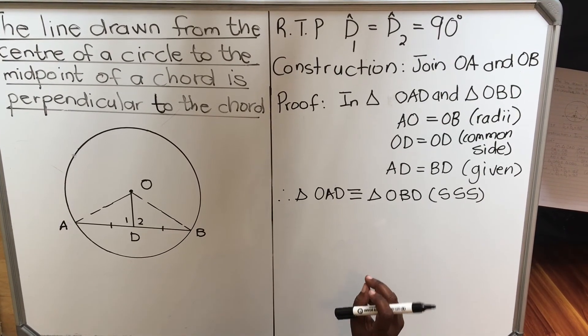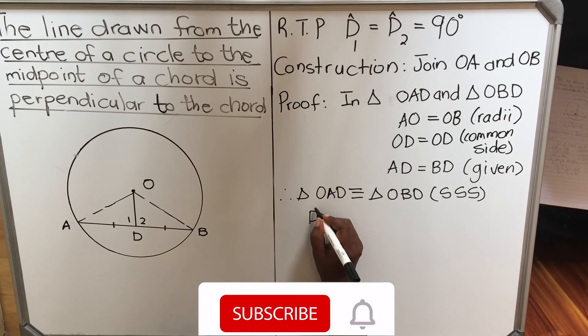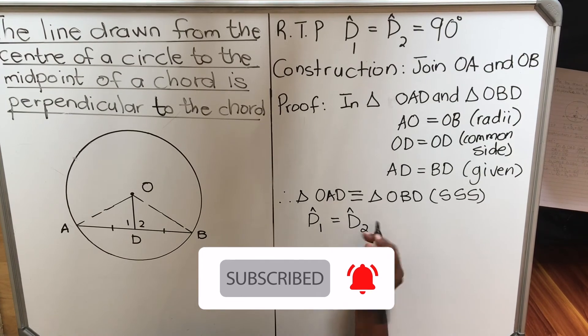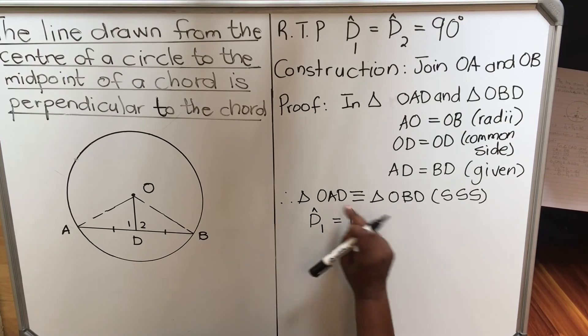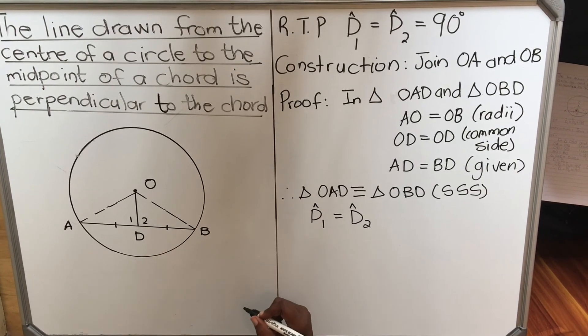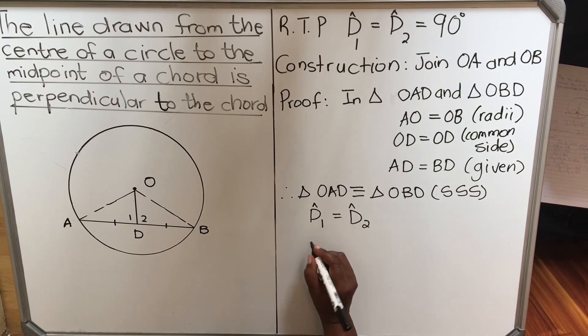Then if they are congruent, it means that angle D1 is equal to angle D2. Because these two triangles are congruent, so they're equal in all respects. Therefore, these two angles will be equal. But what do you notice about these angles?